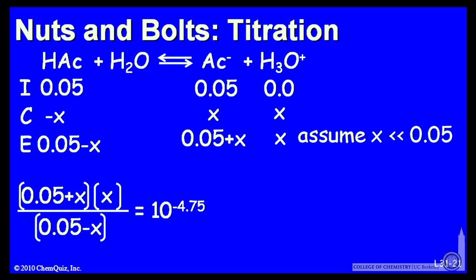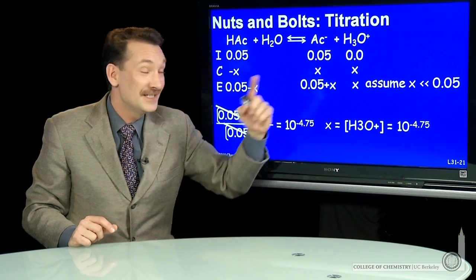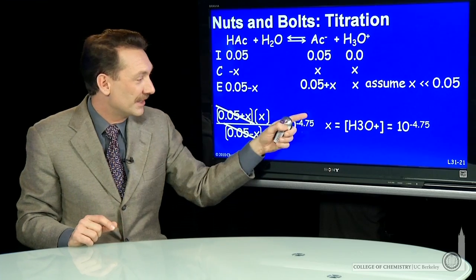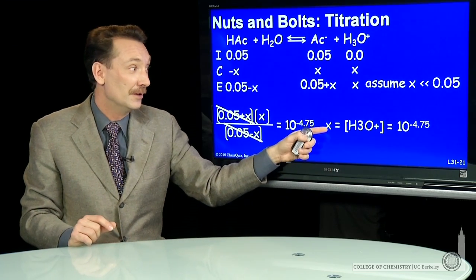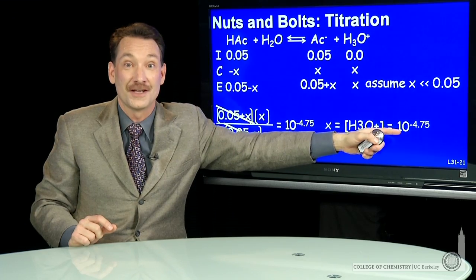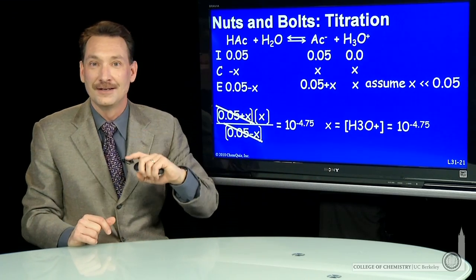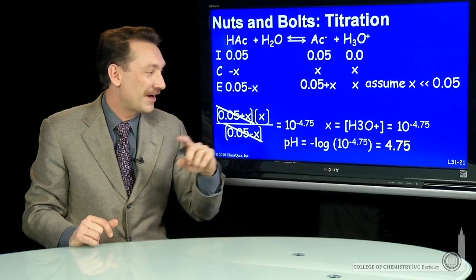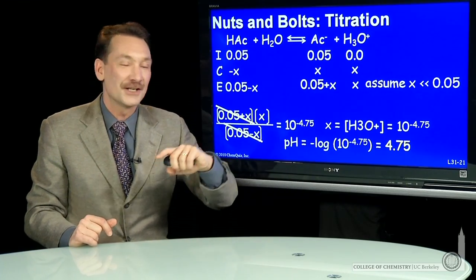Let's do that math. We can assume that x is small compared to 0.05. We can check to see if it is later. So let's just assume it is. If that's the case, then these quantities are about the same. Subtracting a little bit or adding a little bit x to 0.05 leaves you about 0.05. Those two cancel and give me x is 10 to the minus 4.75. That is the H3O plus concentration. And notice that I left the K like this because I knew after I get the H3O plus concentration, I'm going to take minus log of it anyway. So I'm going to go right back to the exponent. So if I calculate the pH, that's minus log of 10 to the minus 4.75, which is 4.75.